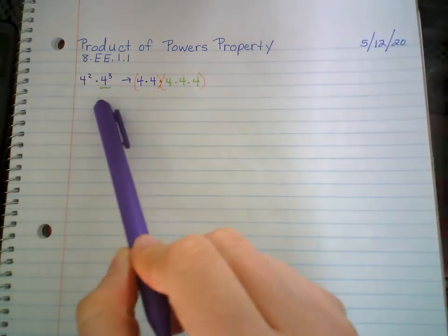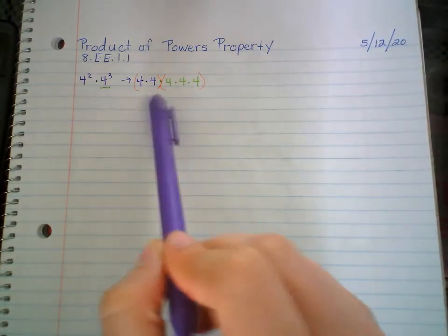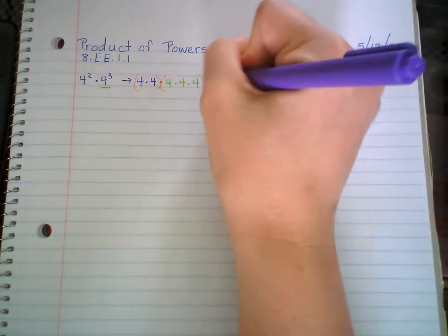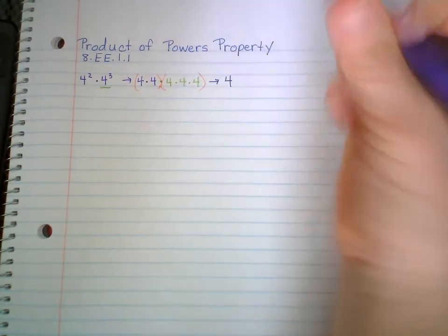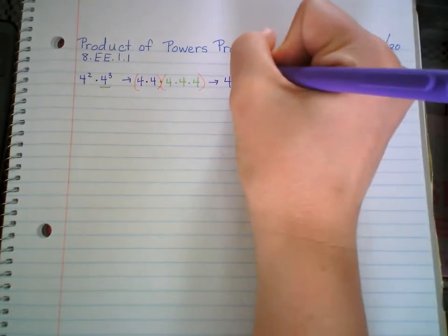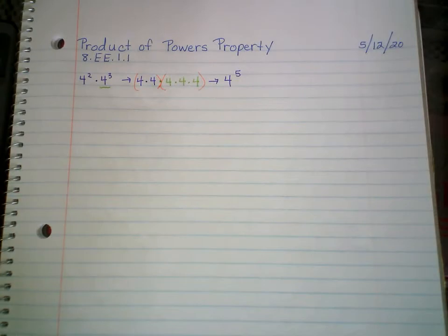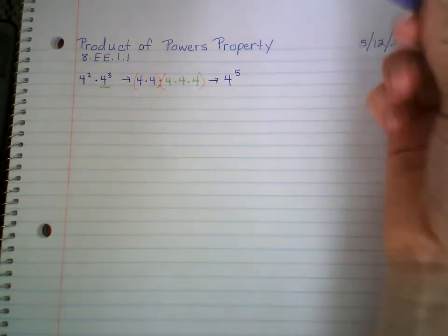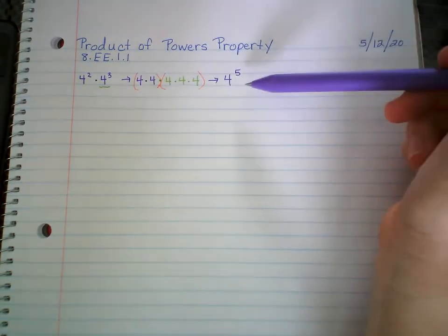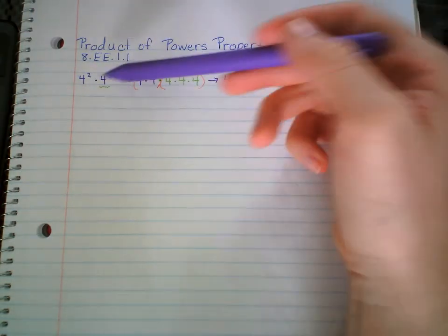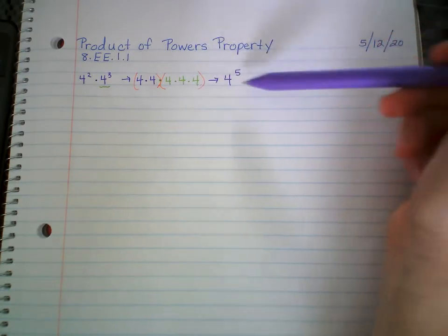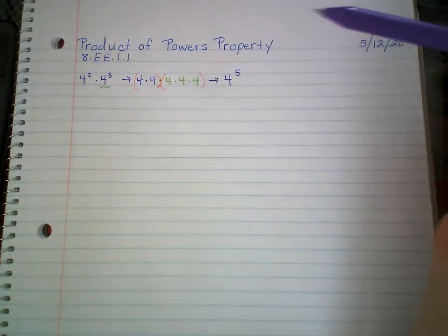Instead of writing 4 to the 2nd by 4 times 4 to the 3rd, we're just multiplying 4 by itself — 1, 2, 3, 4, 5. So that's the same as 4 to the 5th. So why write it out longer when you can just write 4 to the 5th? You're multiplying 4 squared times 4 cubed, which is just the same as multiplying 4 by itself 5 times.